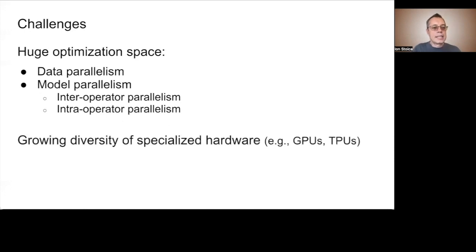Second, there is a growing diversity of specialized processors, such as GPUs and TPUs. These processors have different characteristics which affect training performance. Finally, there is a huge and growing diversity of neural network architectures we need to train at scale.